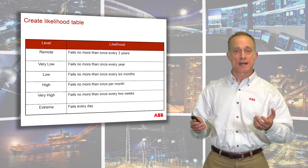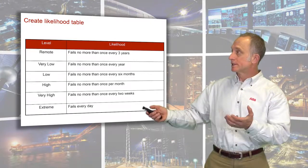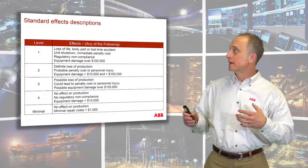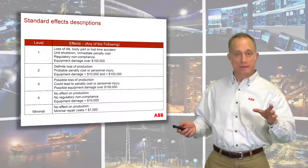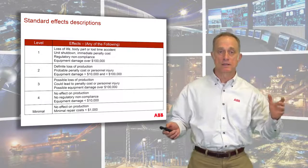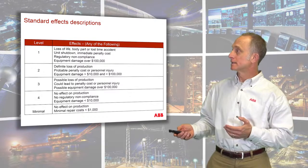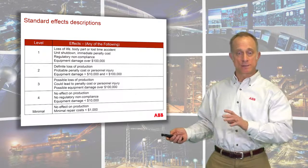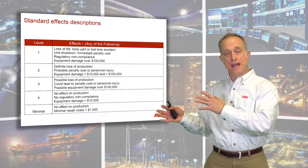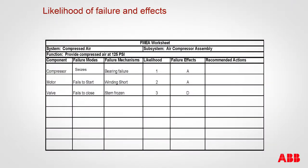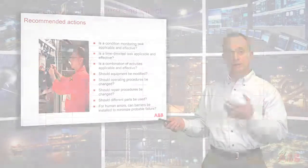We create a likelihood table of that happening, with levels ranging from remote, very low, low, high, up to extreme. We also want effect descriptions. Referencing the criticality levels we defined earlier, a level one criticality effect would be loss of life, body part, or a lost-time accident. We want an apples-to-apples comparison across all systems in the plant. In our example, the compressor seizing is ranked high likelihood, and the failure effect is also ranked high — it would have a major impact on production.